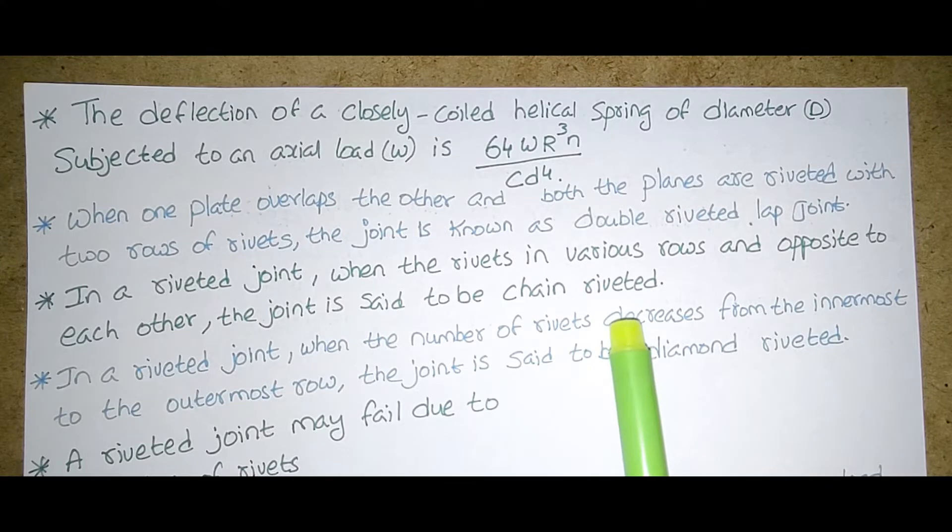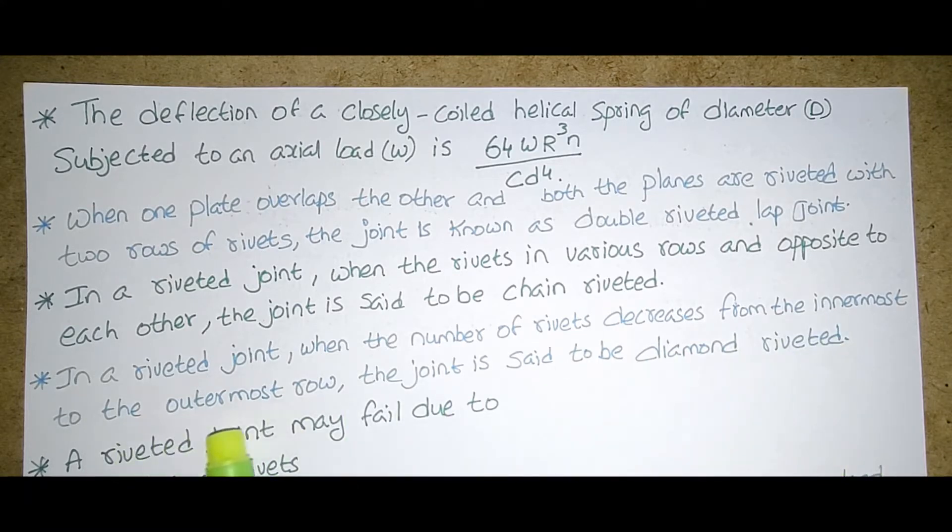In a riveted joint when the number of rivets decreases from the innermost to the outermost row, the joint is said to be diamond riveted.